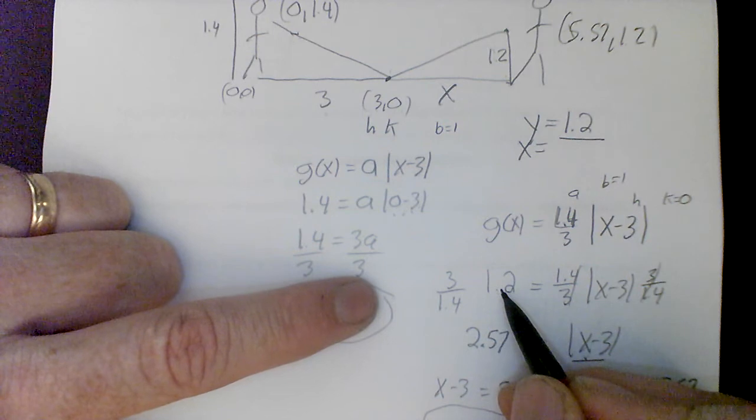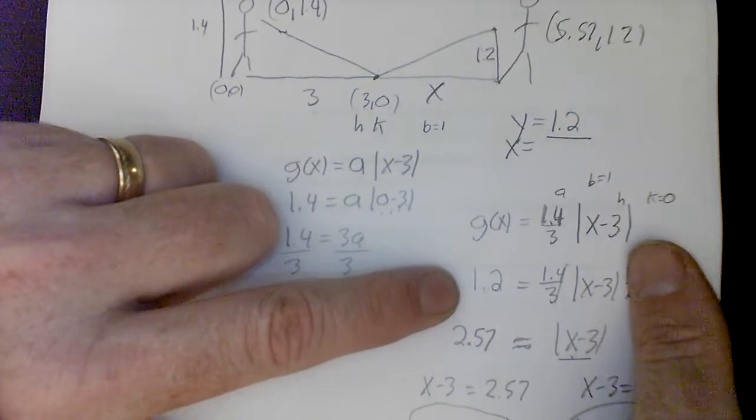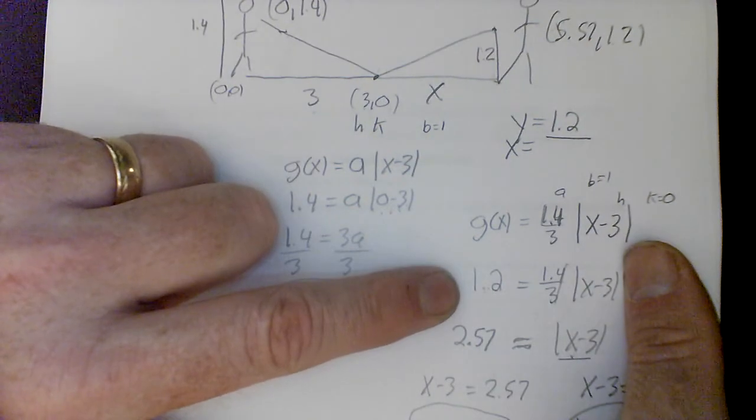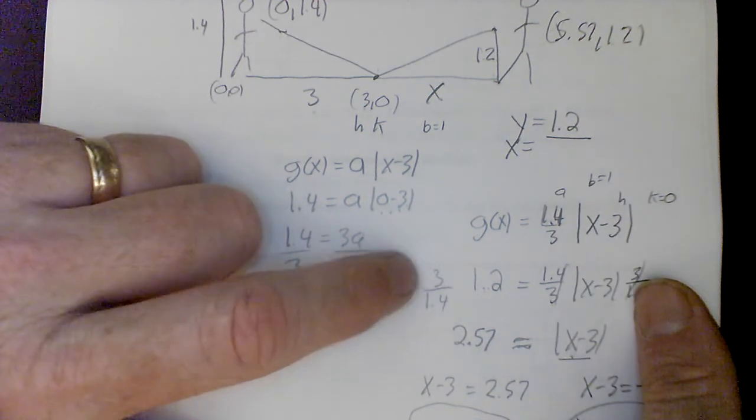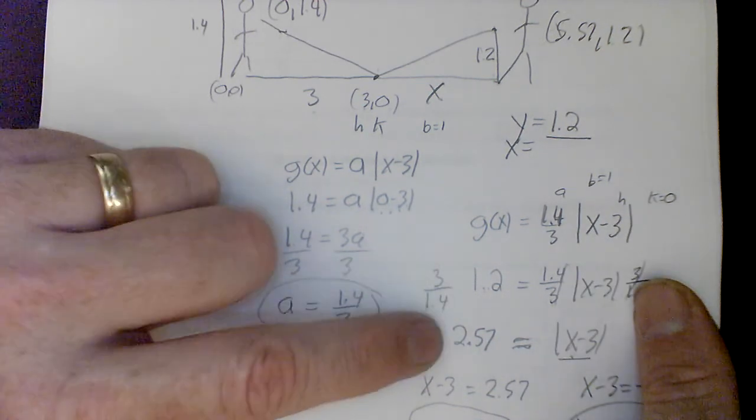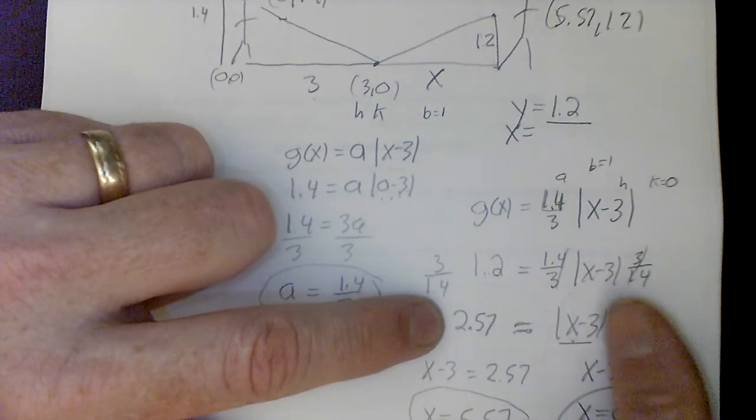So you plug in 1.2, and you had this equation here, 1.4/3 times |x - 3|. Now, you multiply by the reciprocal of this, which is 3 over 1.4, 3 over 1.4. And that gave you about 2.57 equals the absolute value of x minus 3. Now, here's the tricky part.